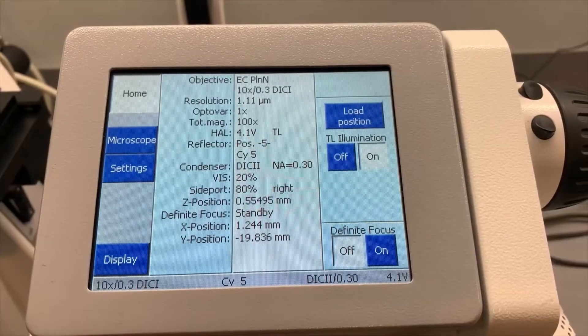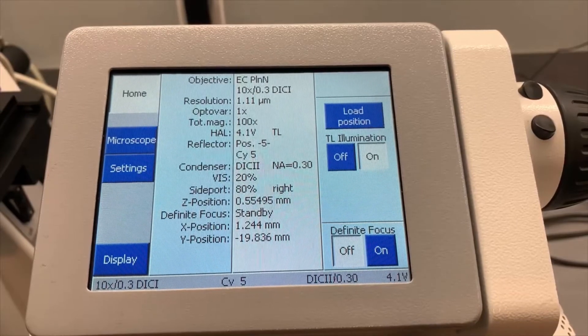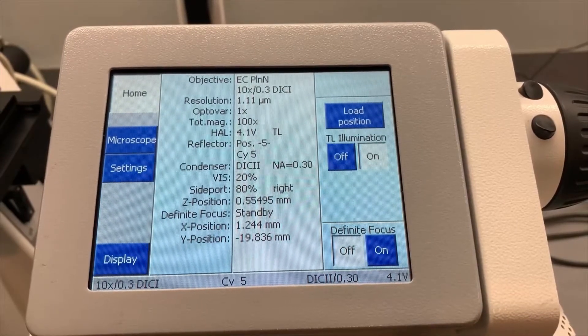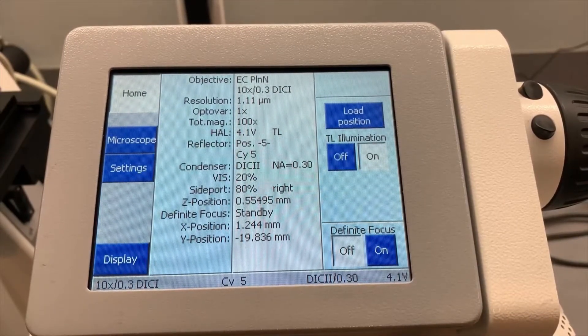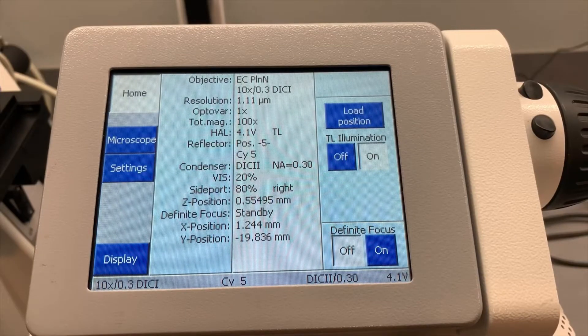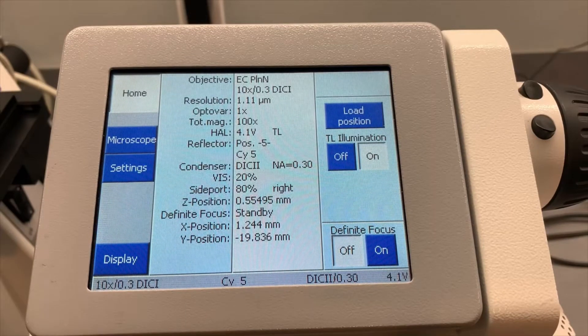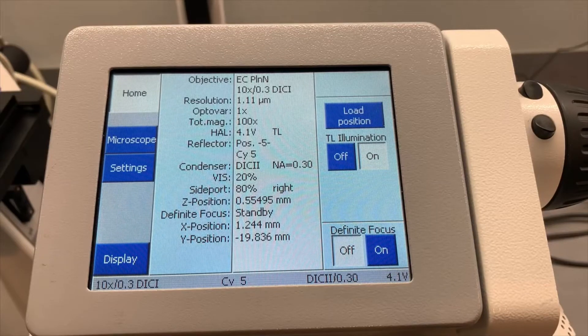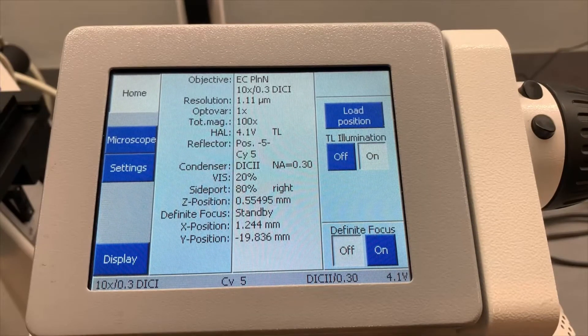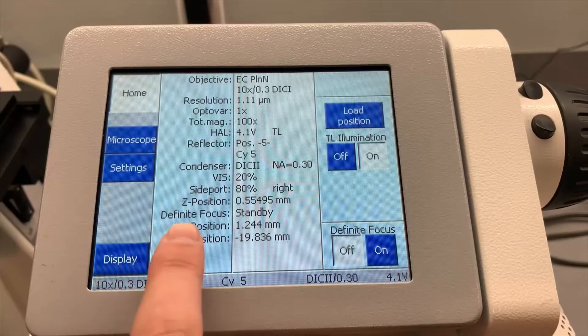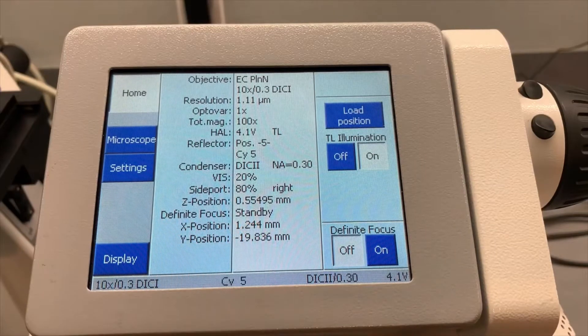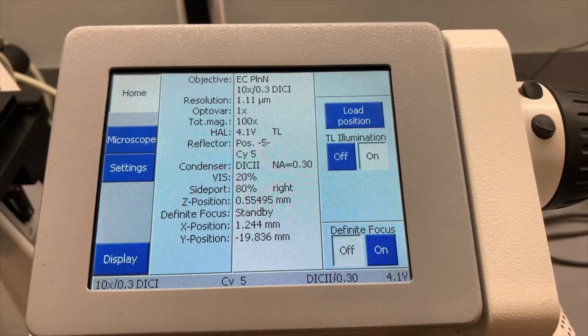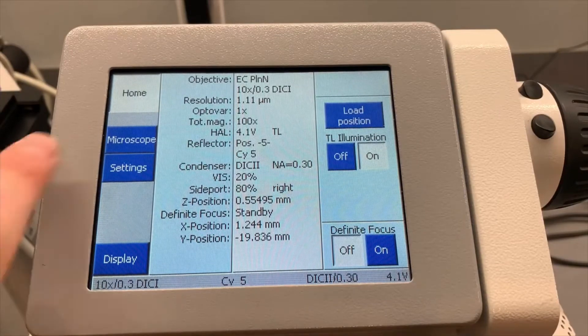As Brian was mentioning earlier this is the Zeiss Observer Z1 with the Definite Focus module attached. So here's the main dashboard display. This main screen just gives you a synopsis of everything that you have programmed and where you're at with this microscope as it's standing. As you can see right here this is definite focus standby which means the focus is working and is on and it's actively reading the position.